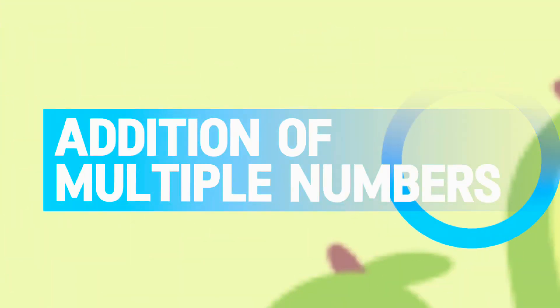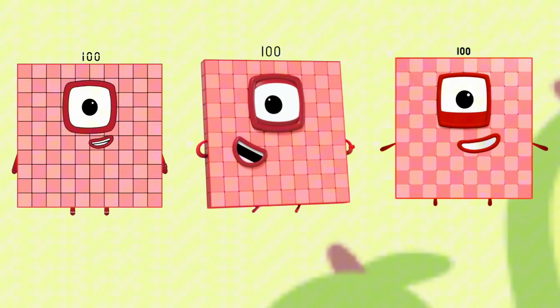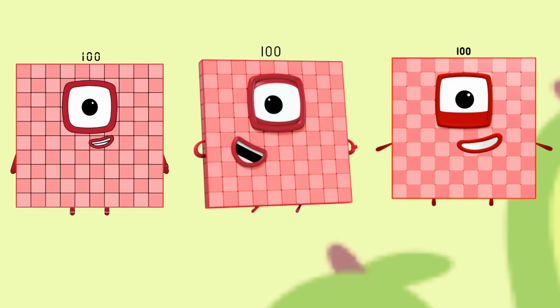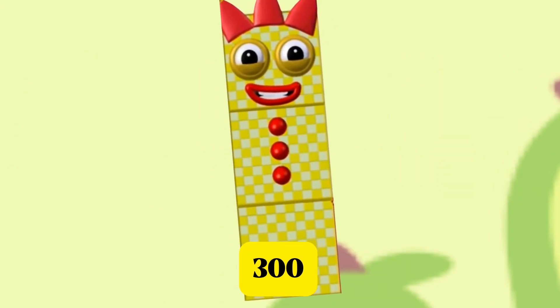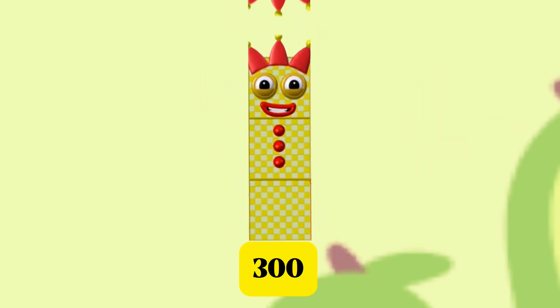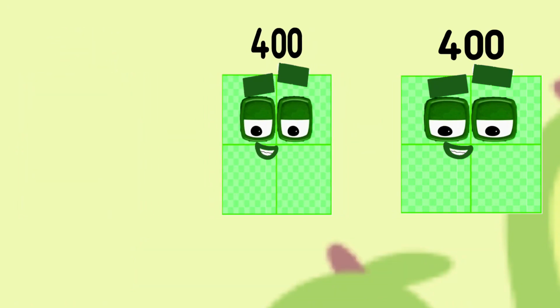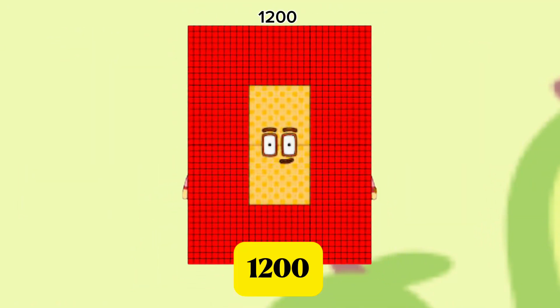Addition of Multiple Numbers. 100 plus 100 plus 100 is equals to 300. 400 plus 400 plus 400 is equals to 1,200.